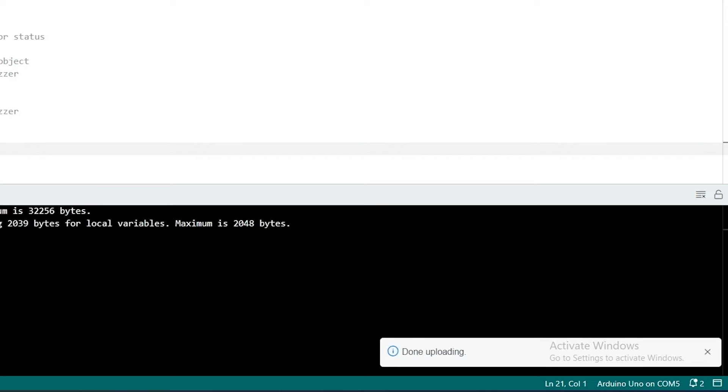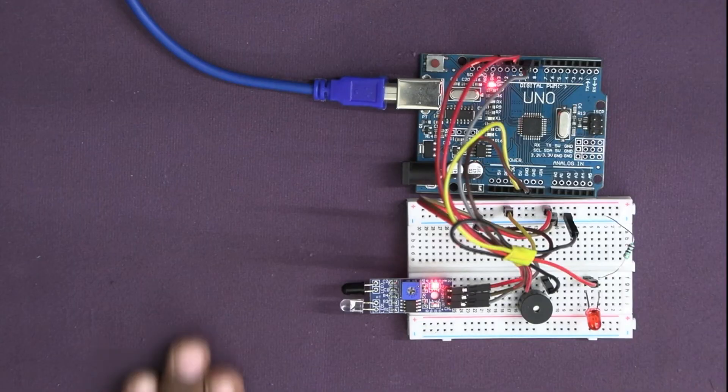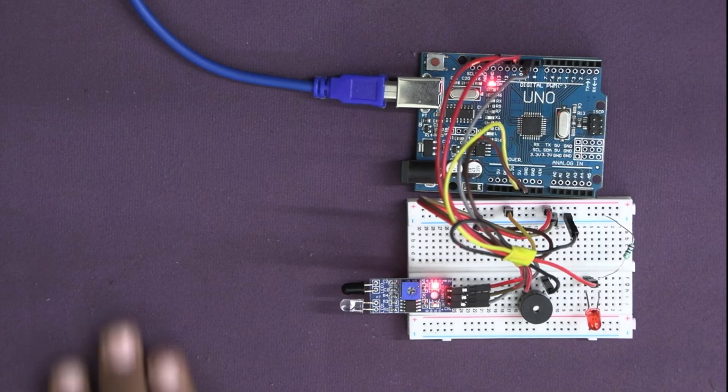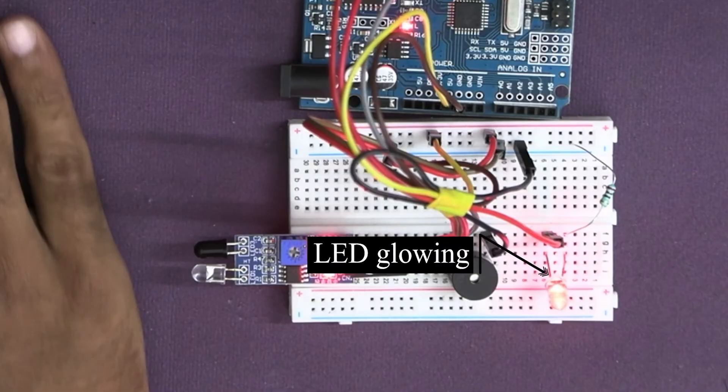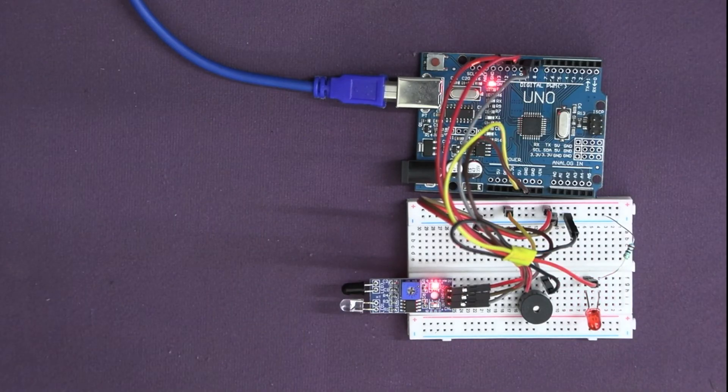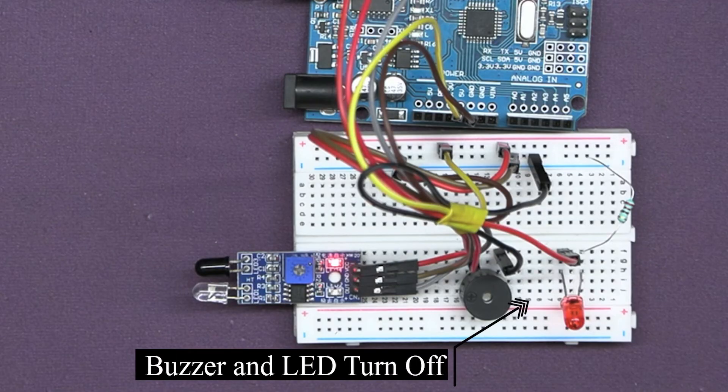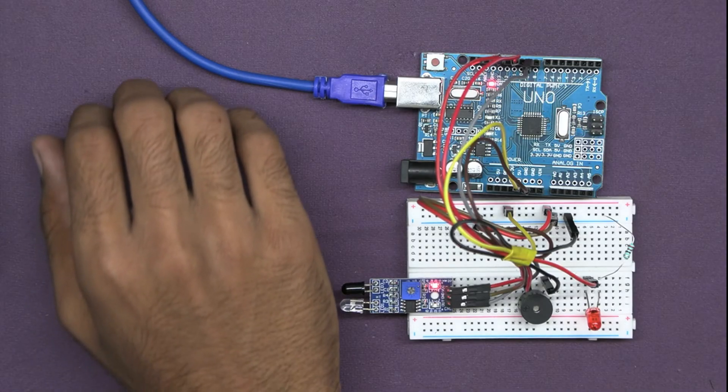Let's test the circuit and see it in action. As I move my hand in front of the IR sensor, you can hear the buzzer sound and see the LED turn on, indicating the presence of an object. When I remove my hand, the buzzer and LED will turn off.